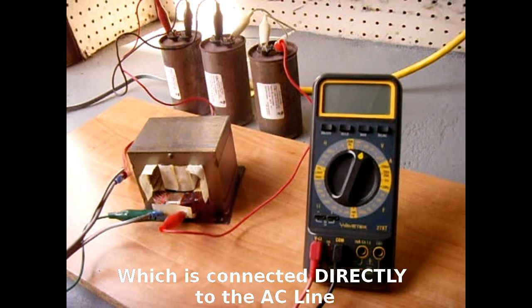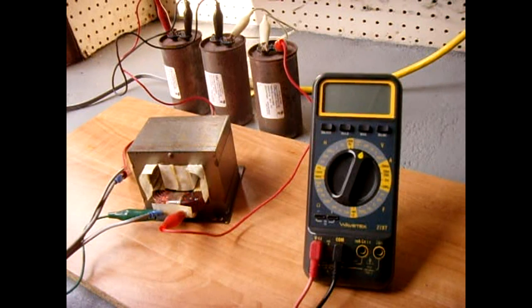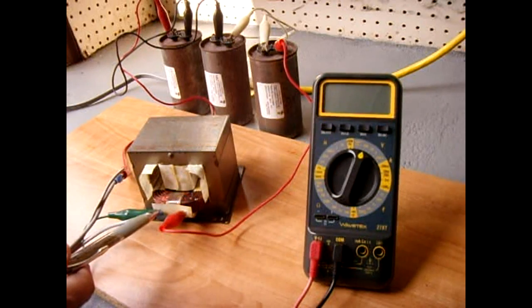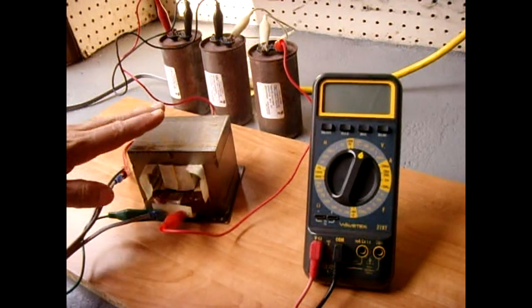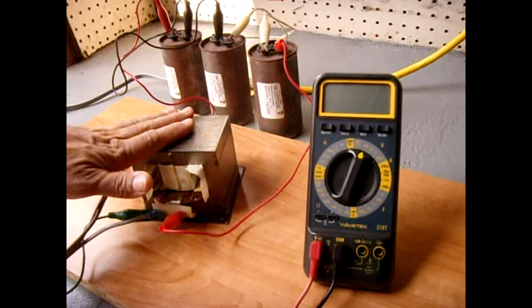Current output is very good on an auto transformer. Now for this demonstration, I'm going to be using one of my microwave oven transformers. As you can see, it only has the primary winding - the secondary has been removed.